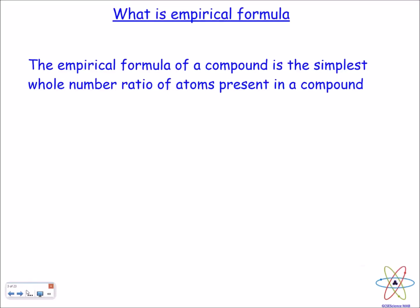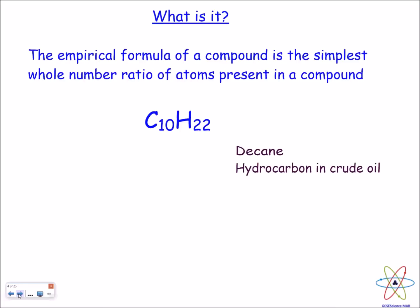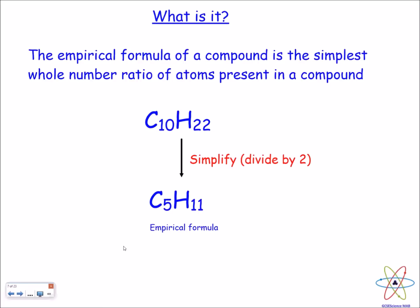Empirical formula is the simplest whole number ratio of atoms present in a compound. To explain this further I'm going to use the example Decane. Decane is a hydrocarbon found in crude oil and it has the molecular formula C10H22. To work out the empirical formula we need to simplify this to smaller numbers so we find the largest number that goes into both of these and that is 2, so it will give us 5 and 11 and this is considered to be the empirical formula. This shows the ratio of carbon to hydrogen in its simplest form.